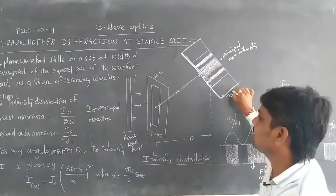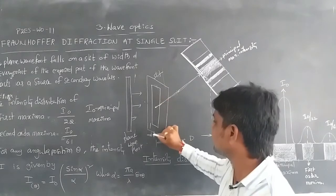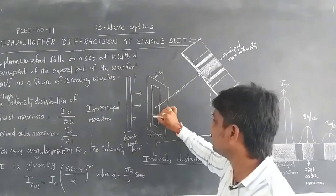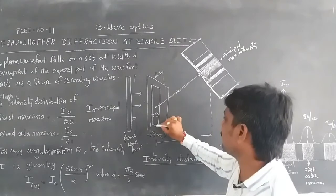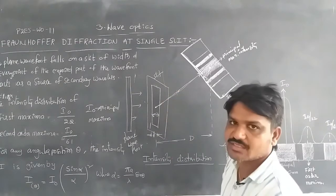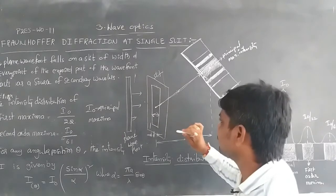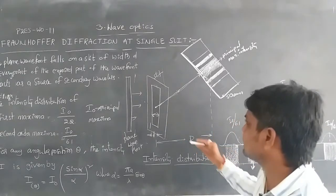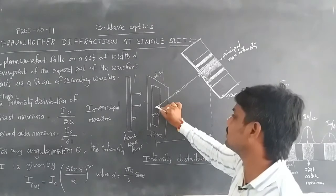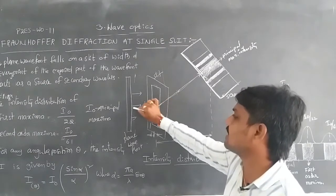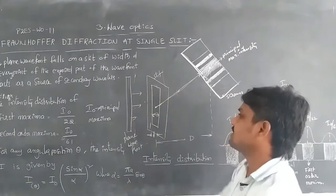The slit has a width denoted as small d. At every point on the slit, the wavefront acts as a source of secondary wavelets, which travel outward from the slit toward the screen.